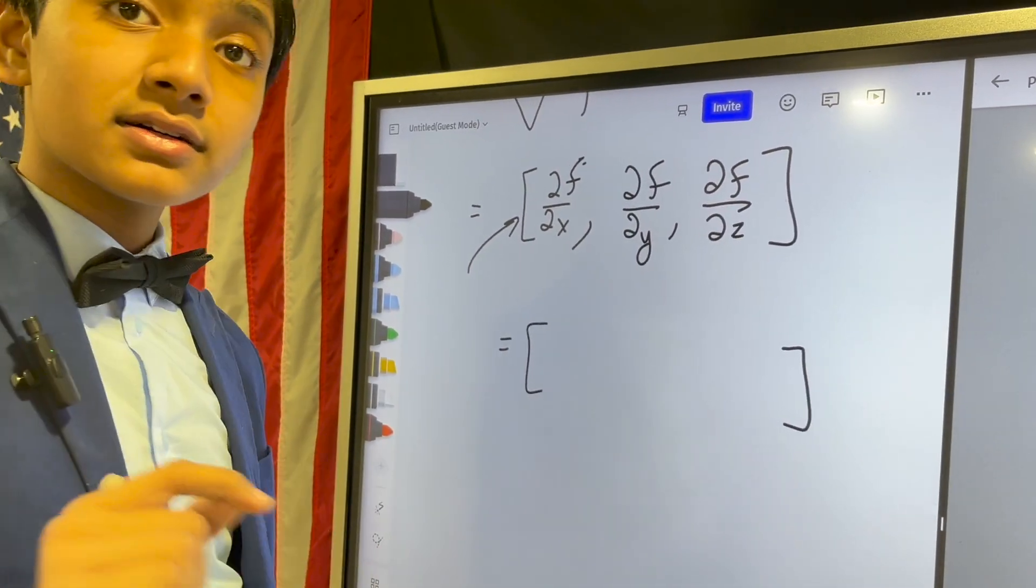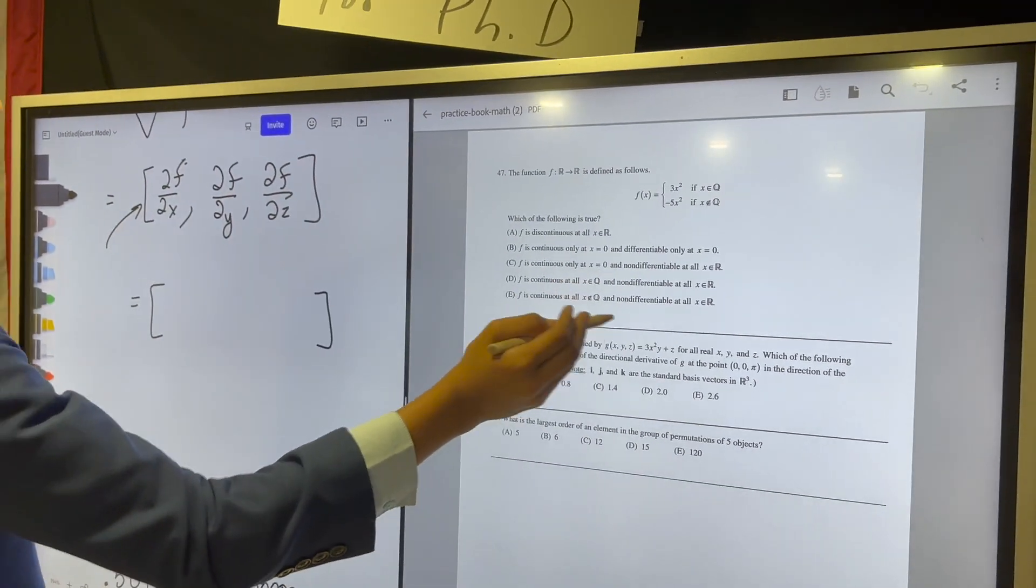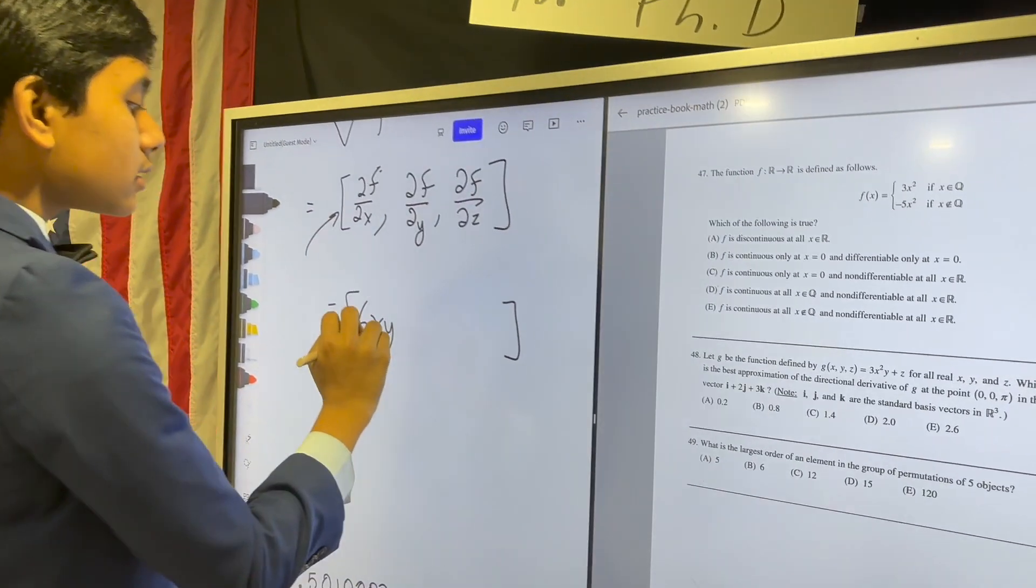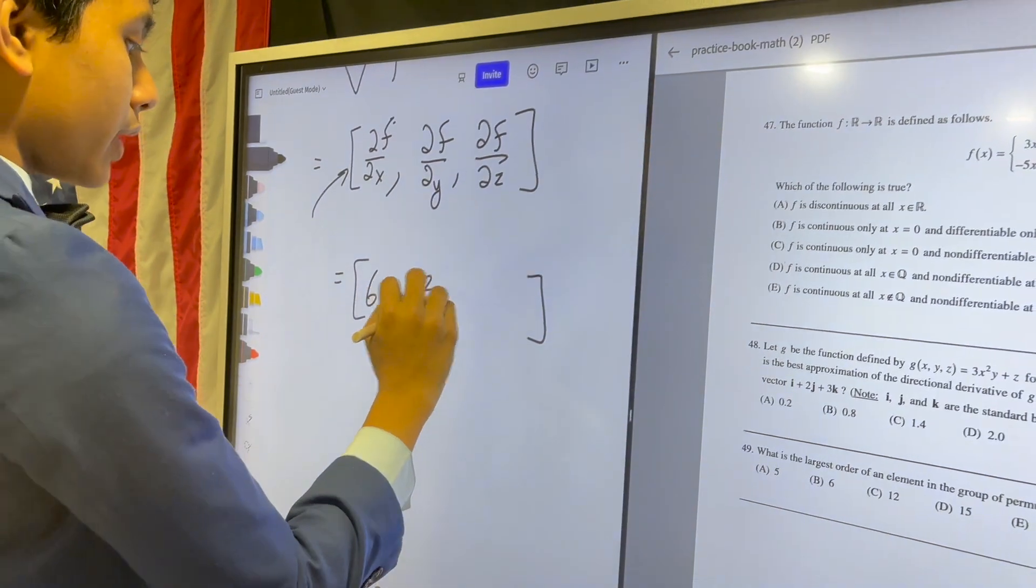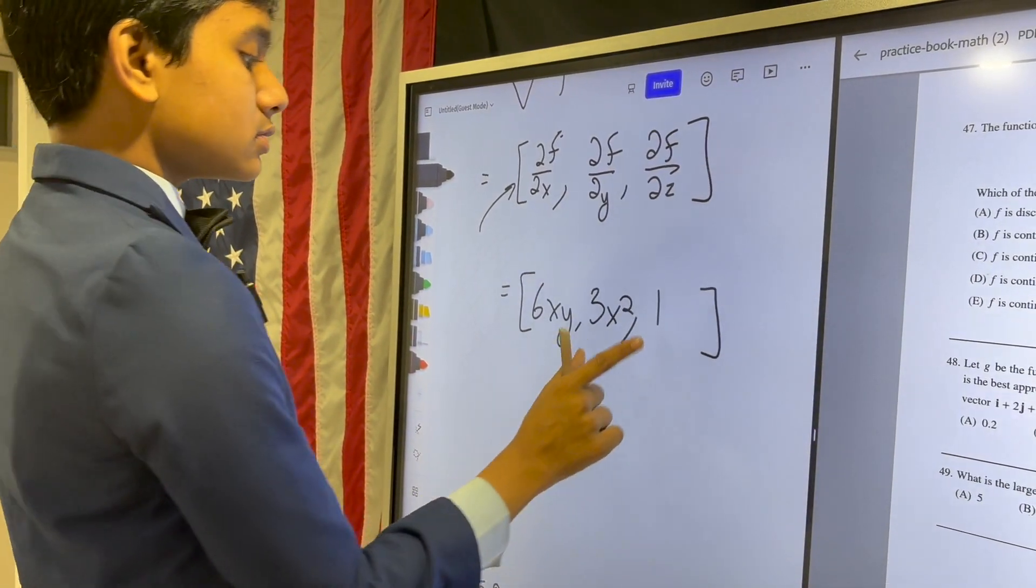So in this specific scenario, what would it look like? Well, the derivative with respect to x is 6xy. With respect to y is just 3x². With respect to z is just 1.